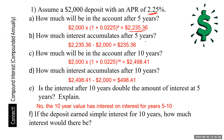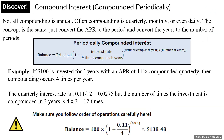Comparing: if the deposit earned simple interest for 10 years, it's just principal times rate times time. You realize that compound interest gives you more on your money than simple interest.